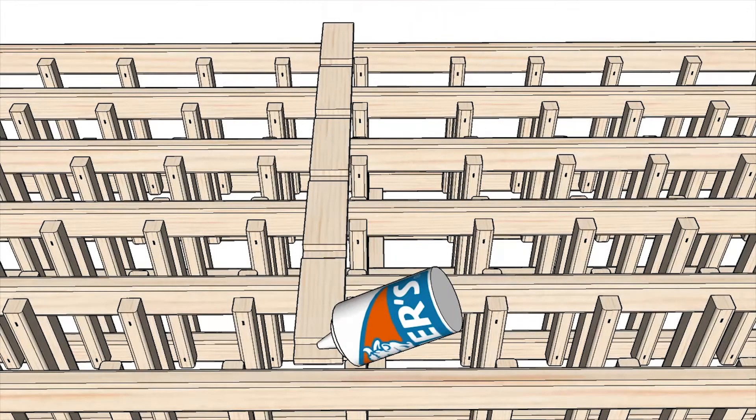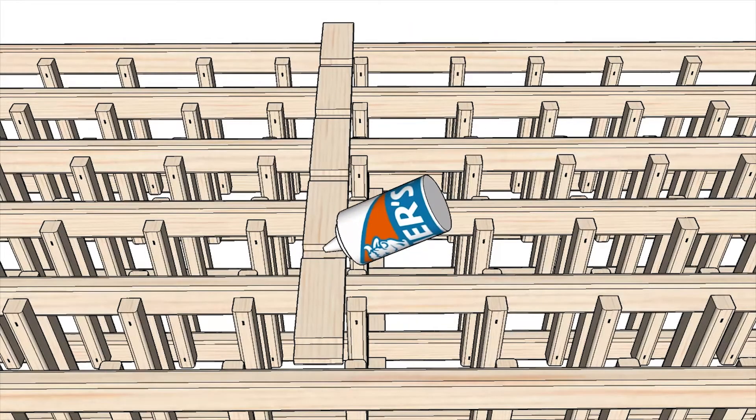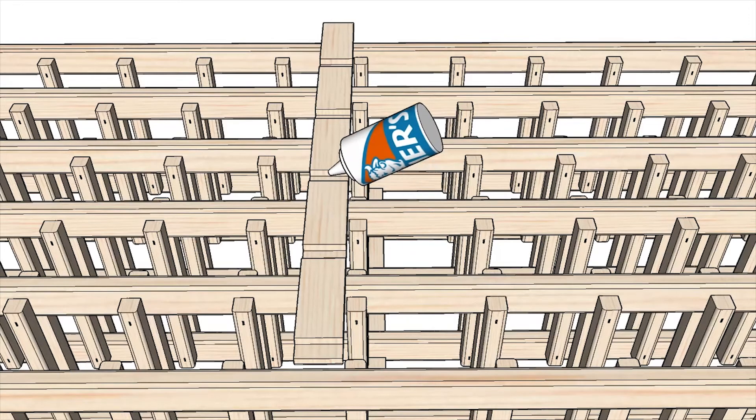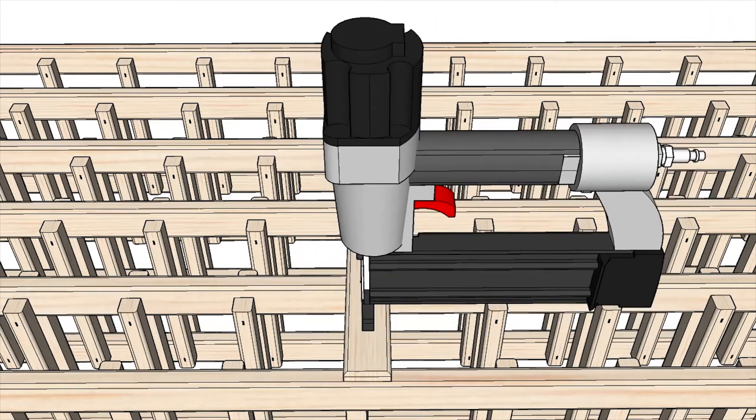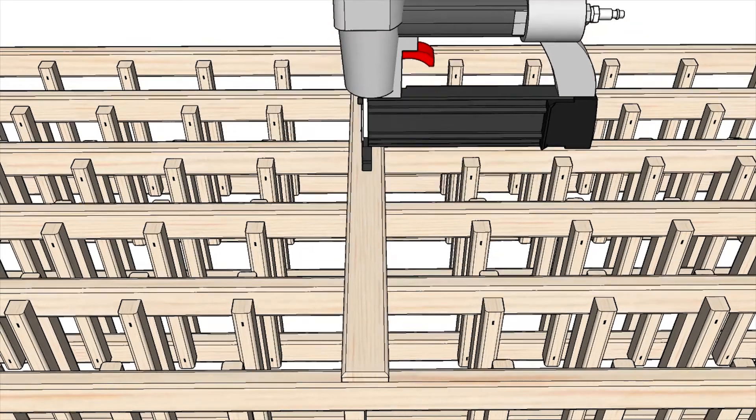For option 1, add wood glue to the inside of each connector notch. Set the connector in place and hold. For added support, use a finished nail gun to tack the connector to the two end ladders and one middle ladder.